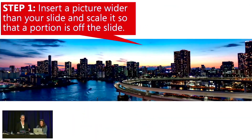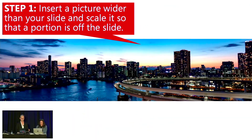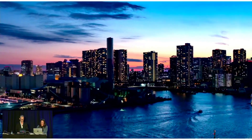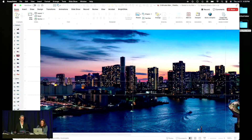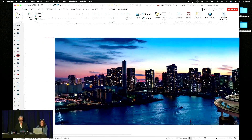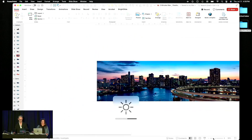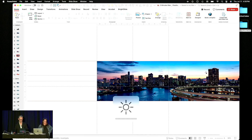Step number one is you find a picture that's wider than your slide, and you scale it up so part of it's hanging off your slide. So here it goes, I'm scaling it up. But if I were to zoom out of this picture, we can see — there it is.